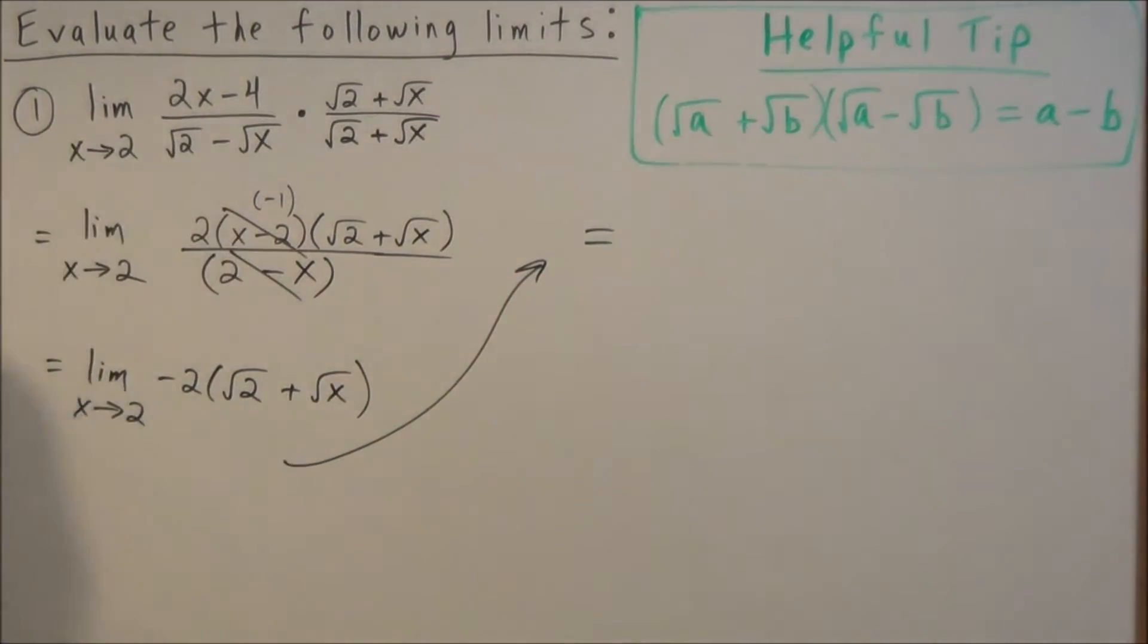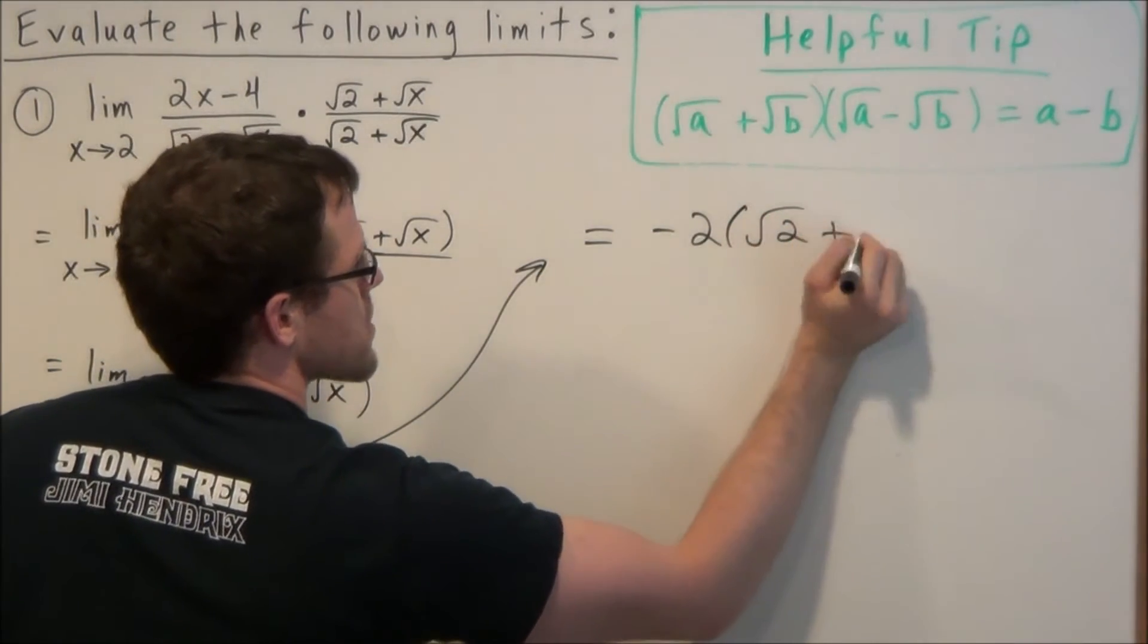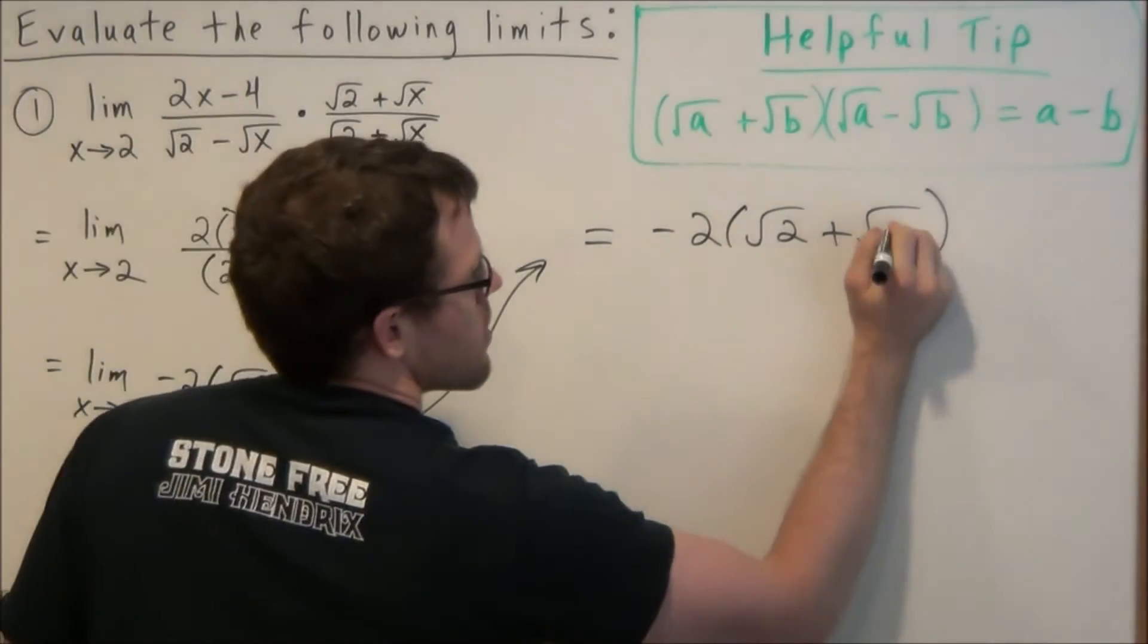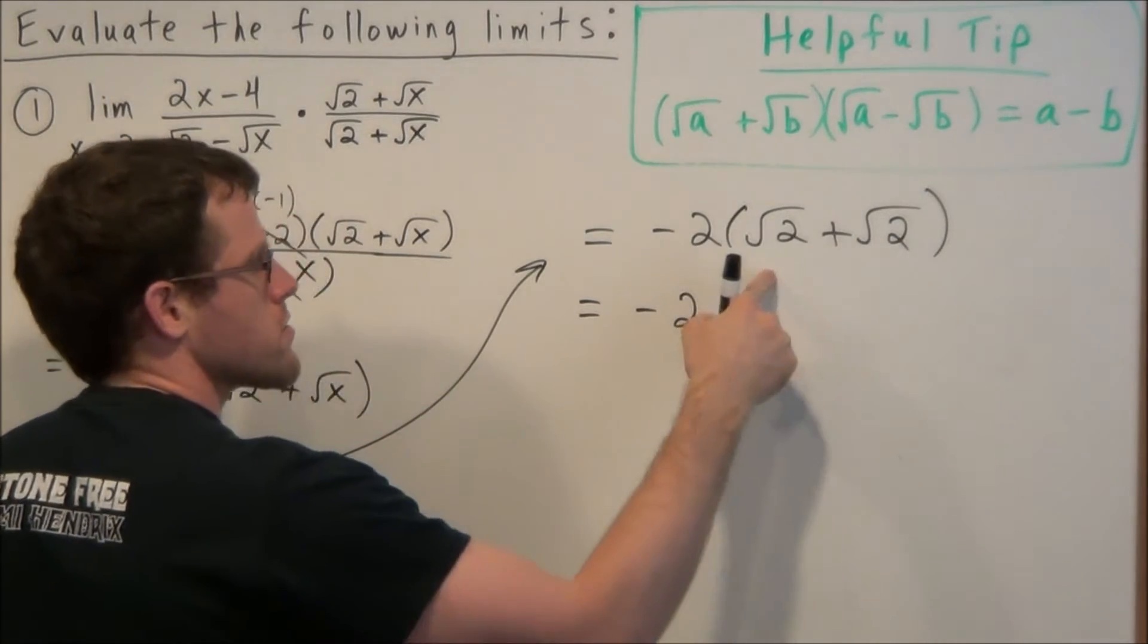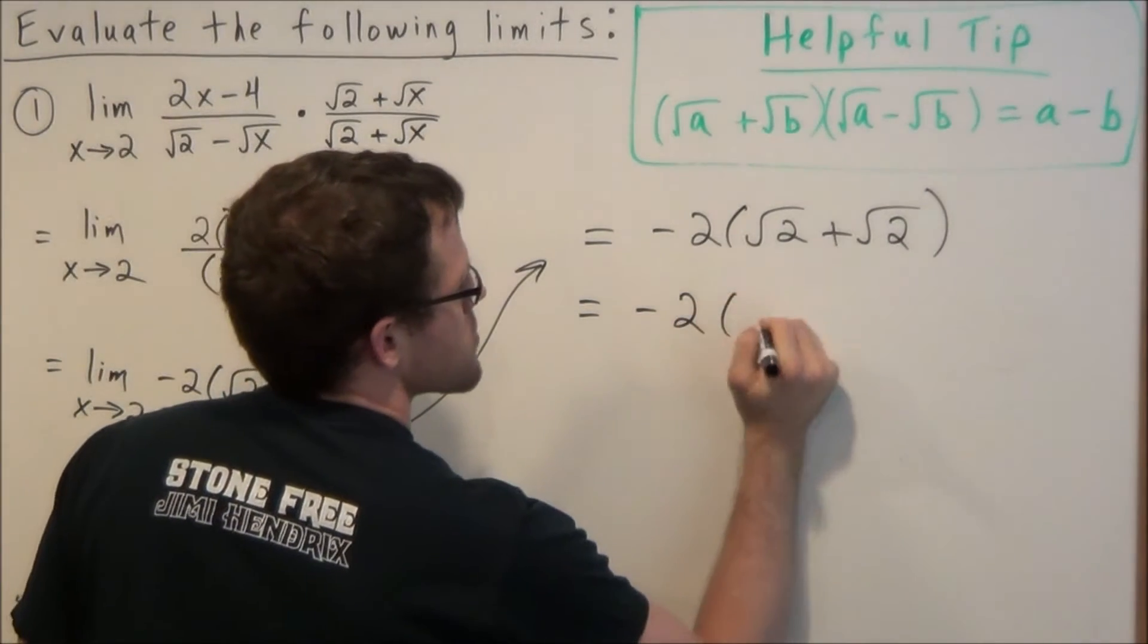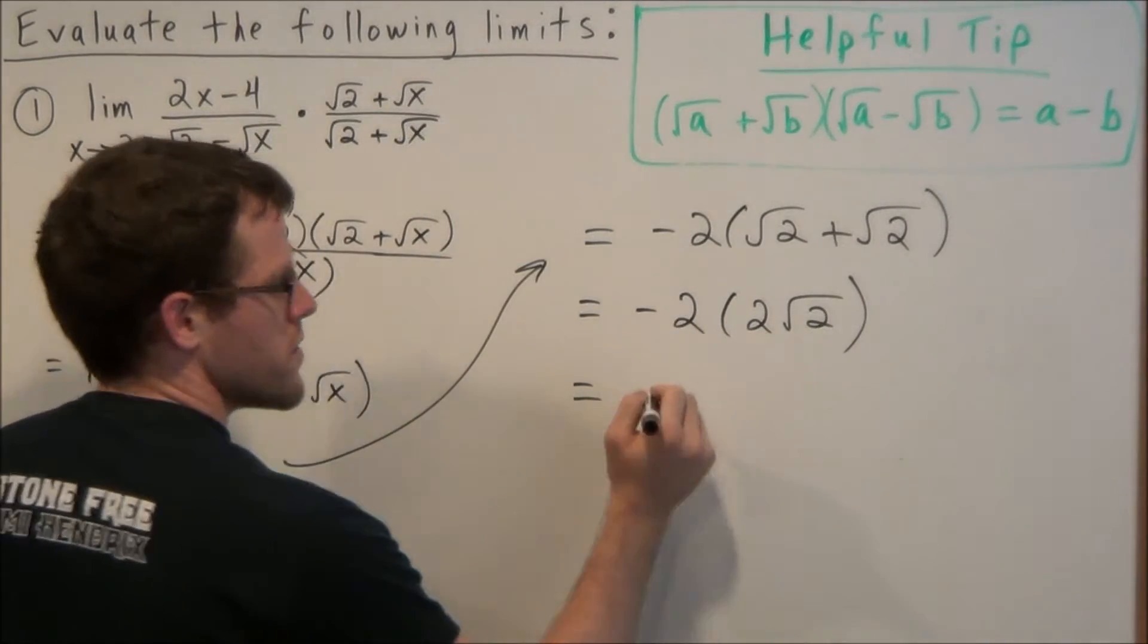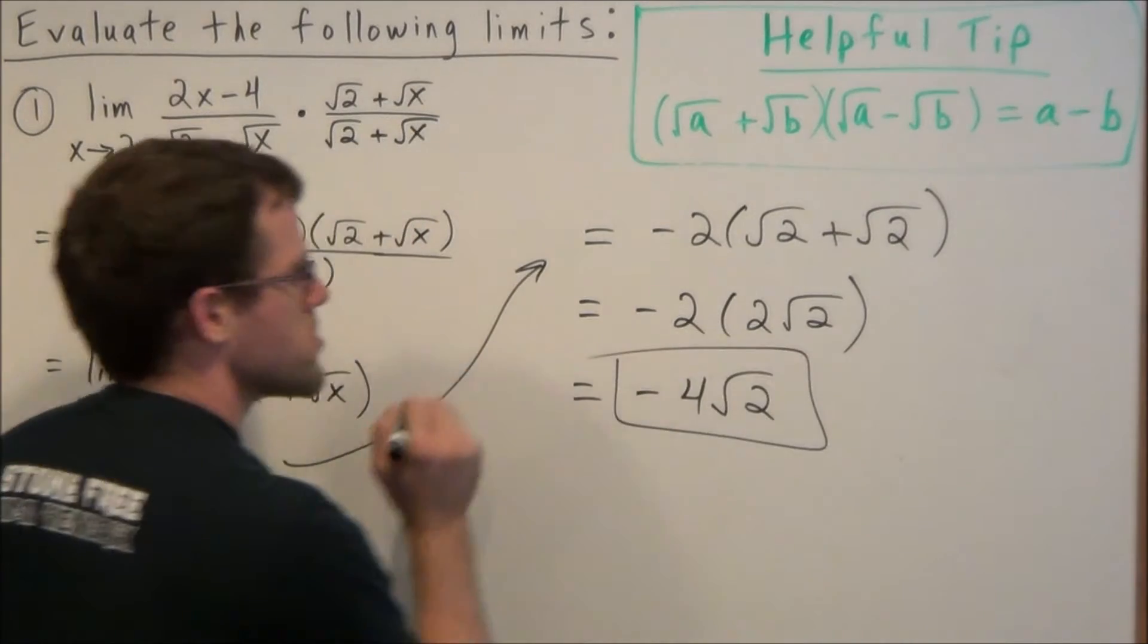So then to simplify this limit, this limit is equal to negative 2 times radical 2 plus, and instead of radical x, we're going to replace x with 2. So now this simplifies to negative 2, and we have radical 2 plus radical 2 is 2 radical 2. And if we multiply the coefficients, we're going to get negative 4 radical 2. So this is our solution to the first example.